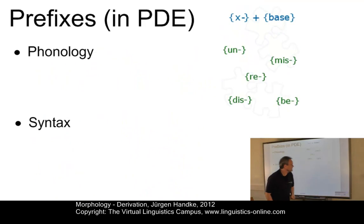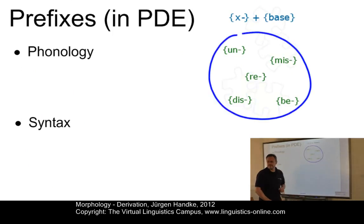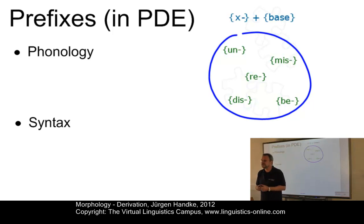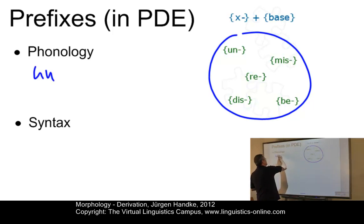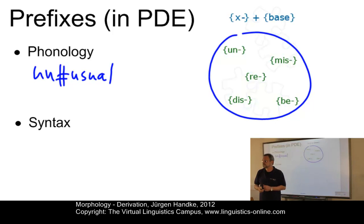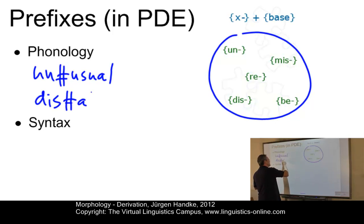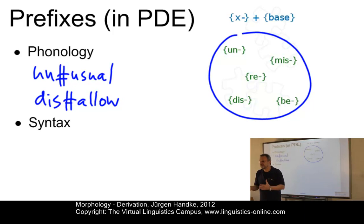Let's now look at prefixes in particular. Here you find a set of prefixes, and they have one thing in common: they normally do not inflict phonological changes. They are stress neutral. In cases like 'unusual,' you have 'unusual' — no stress change. In cases like 'disallow,' you have 'allow' and 'disallow.' So really they are stress neutral; they are phonologically not really relevant.